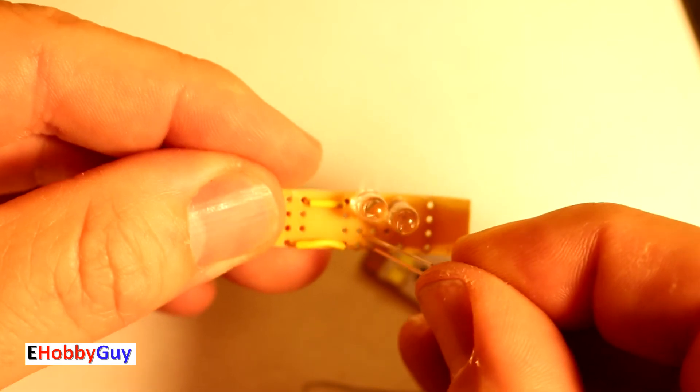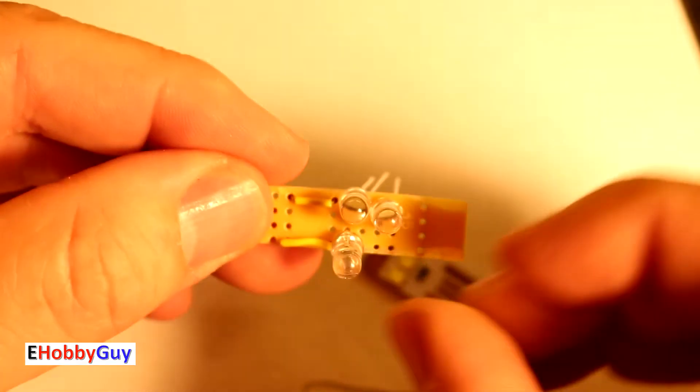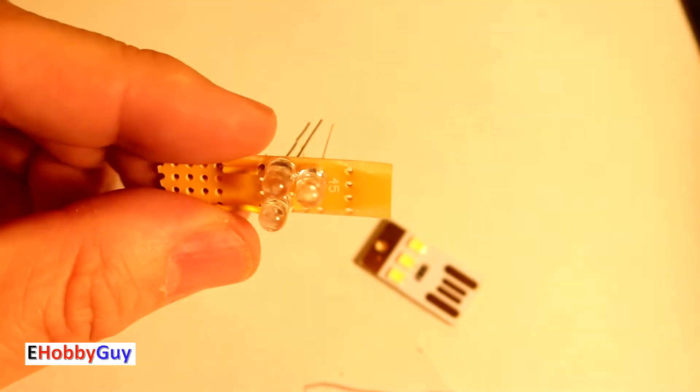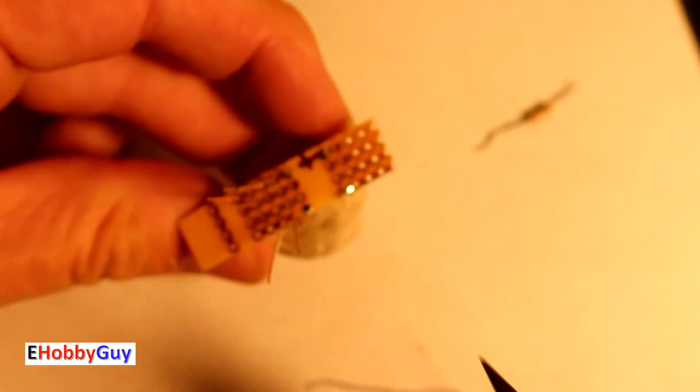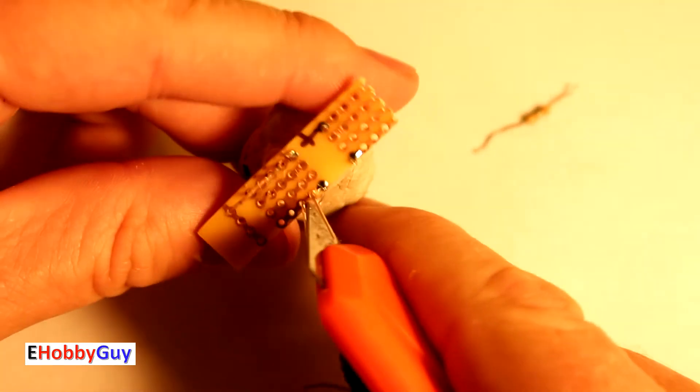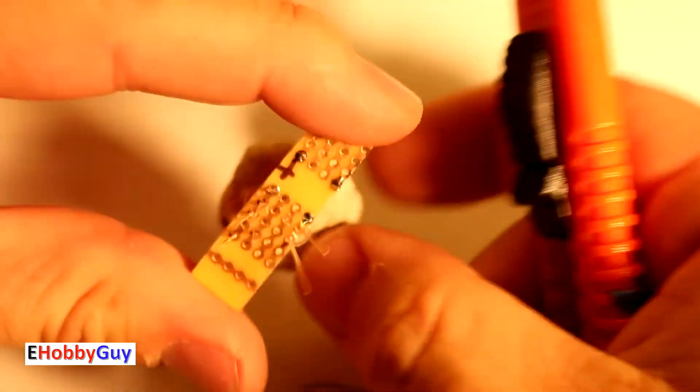So I need to get the three anodes tied together, three cathodes tied together, and get the anodes to the plus and the cathodes to the minus. But it's got to go to that 15 ohm resistor before it goes to the negative. I almost forgot, but I do have to scrape some traces here in between so that the positives and the negatives are not shorted out.